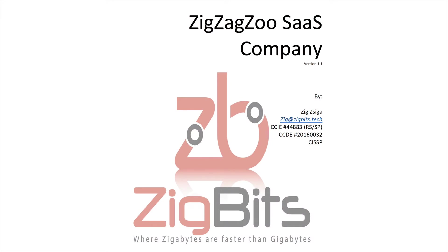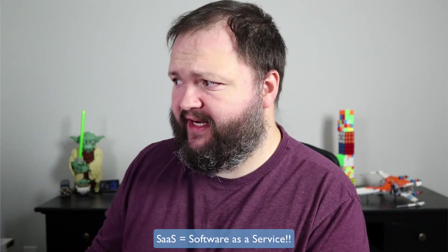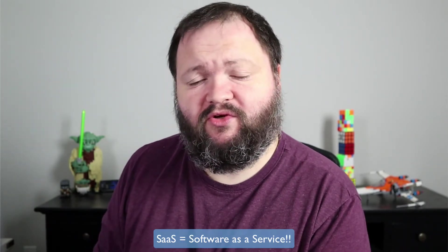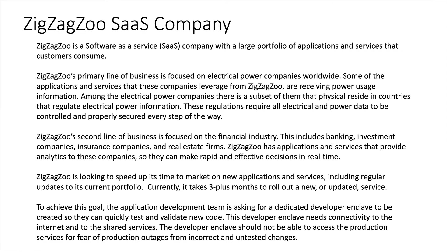I like to have a scenario, a story, and that's what we're going to start out with here. As I look at the screen, we have a ZigZag Zoo SaaS company. If you're not familiar with what a SaaS is, that is a software as a service company. What I mean by that is that there's some sort of application deployed somewhere, even on-prem or in the cloud, and customers are leveraging that application. So some background information about our company and what they're trying to accomplish, and why we're being brought in to solve some sort of problem with a technical solution.